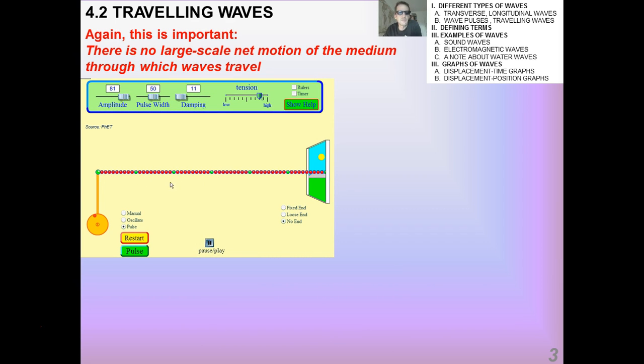Just to reiterate how important it is that there's no large scale net motion of the medium. This is a FET simulation. And if you keep your eye on one of these beads on this wire, you can see that as the energy passes through, all the bead does is it just goes up and down. This green bead where I have my pointer directed to here does not go flying out the window.